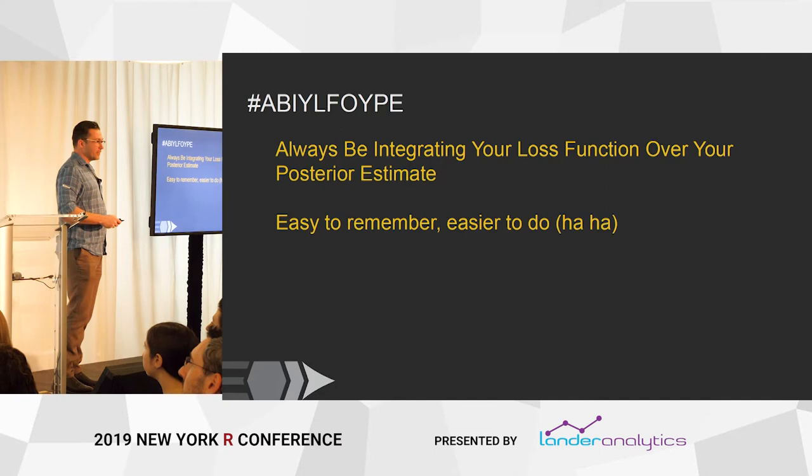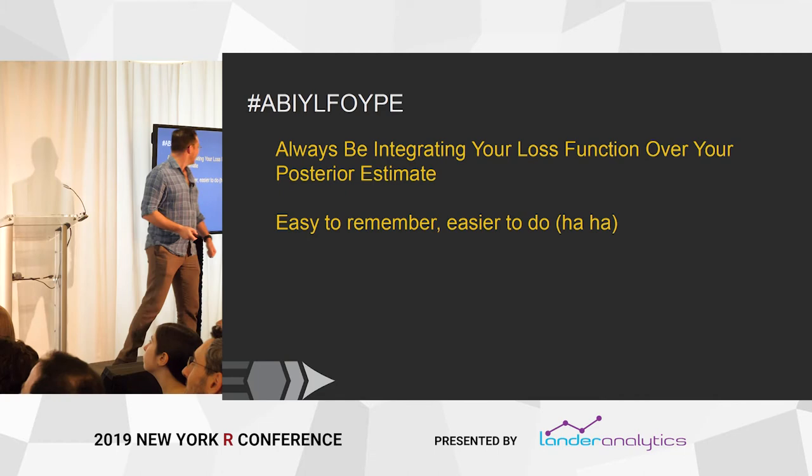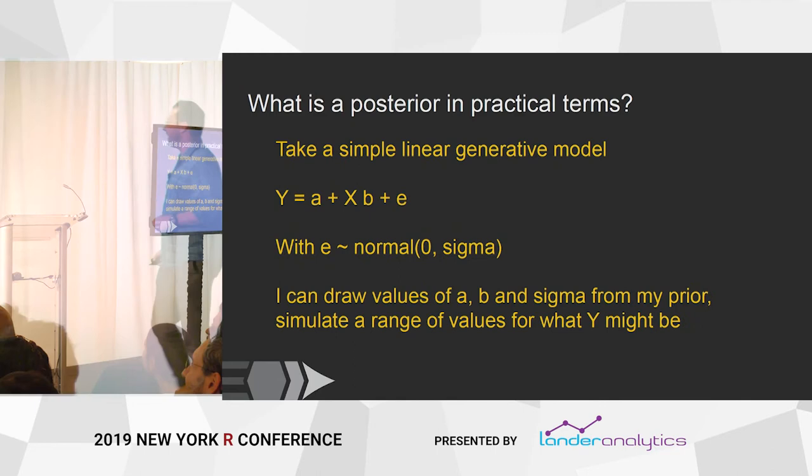AbleFwipe — this is all you need to remember: always be integrating your loss function over your posterior estimate. Easy to remember, easier to do.